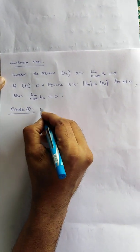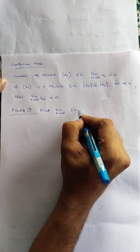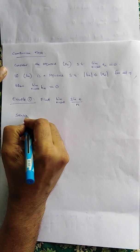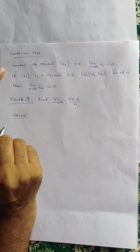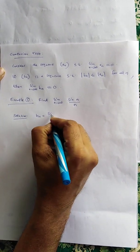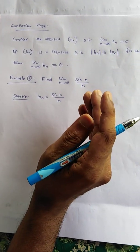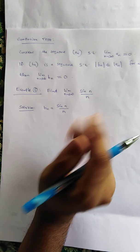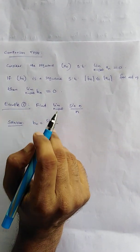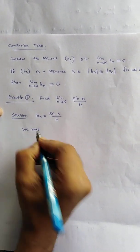Example 1: Find lim(n→∞) sin(n)/n. To apply the comparison test, we take b_n = sin(n)/n, and we need to compare it with a sequence whose limit is known to be 0. One such sequence is 1/n.